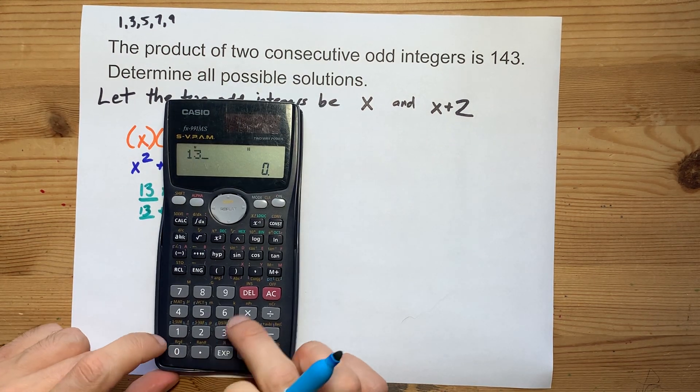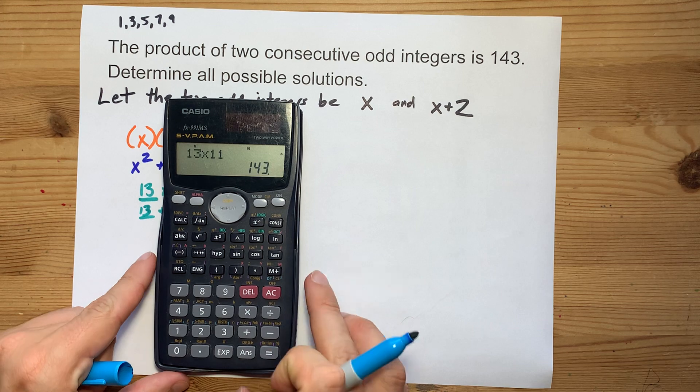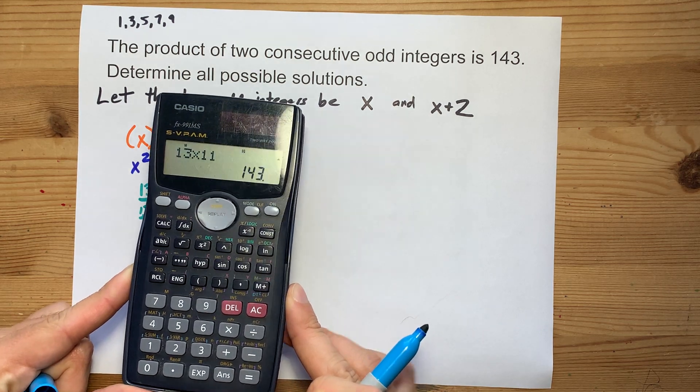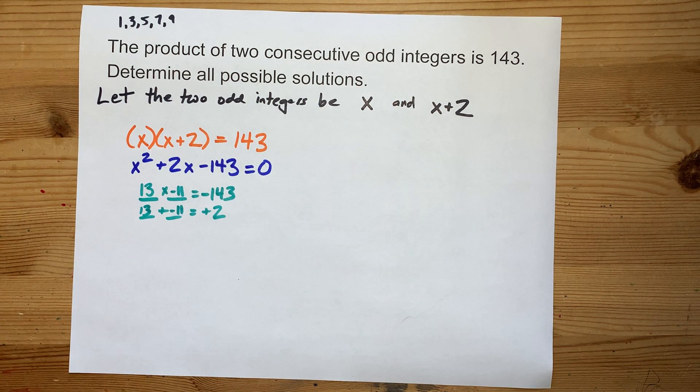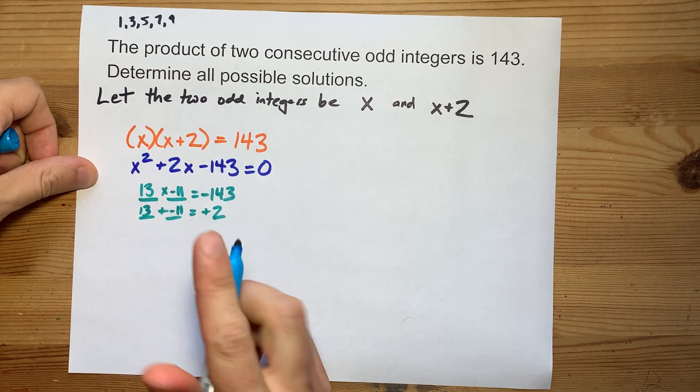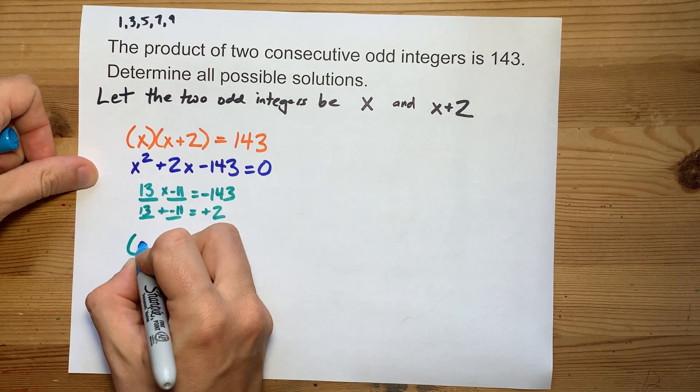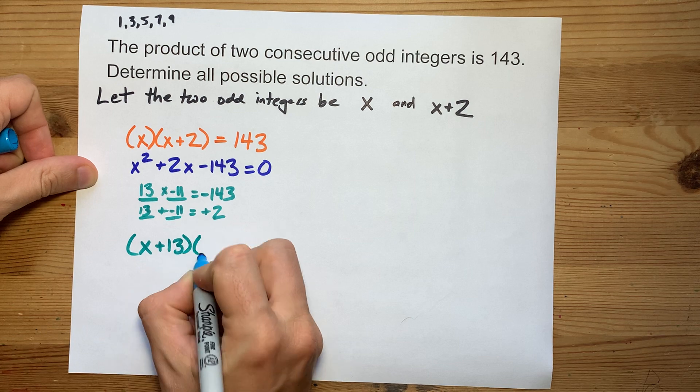Let me just verify that on my calculator. 13 times 11 is 143. Beautiful.